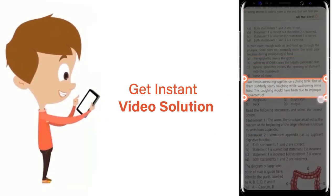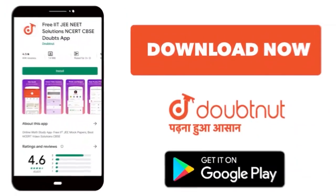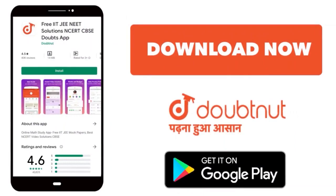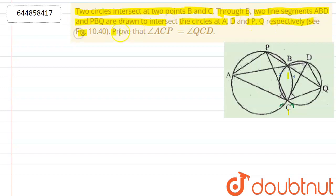Here the question is: two circles intersect at points B and C. Through B, two line segments ABD and PBQ are drawn to intersect the circles at A, D and P, Q respectively. See the figure. Prove that angle ACP is equal to angle QCD.